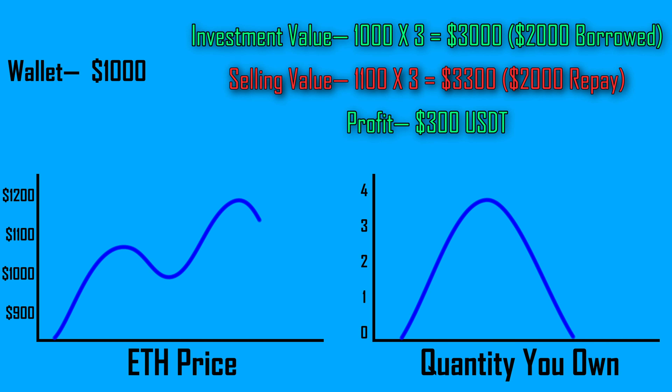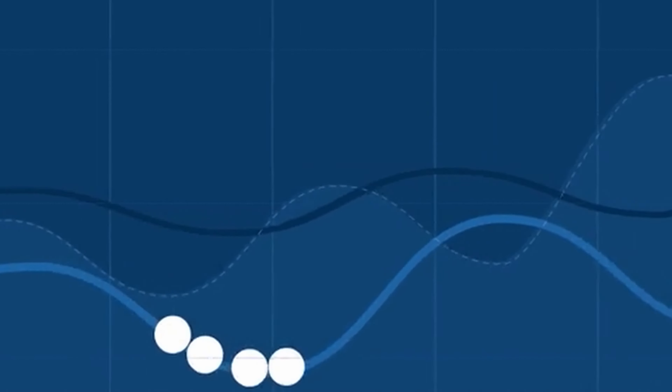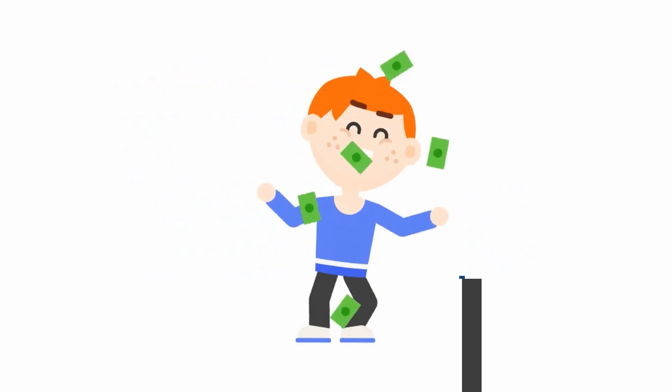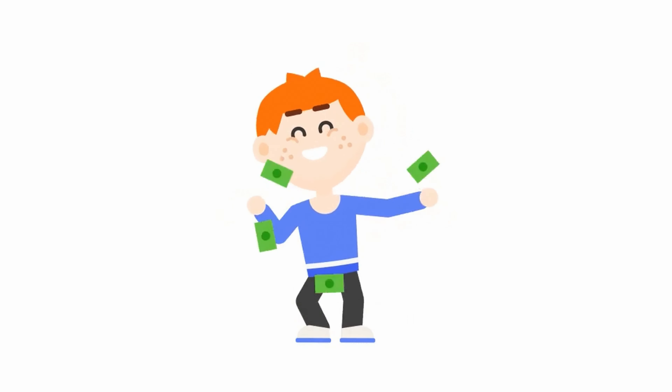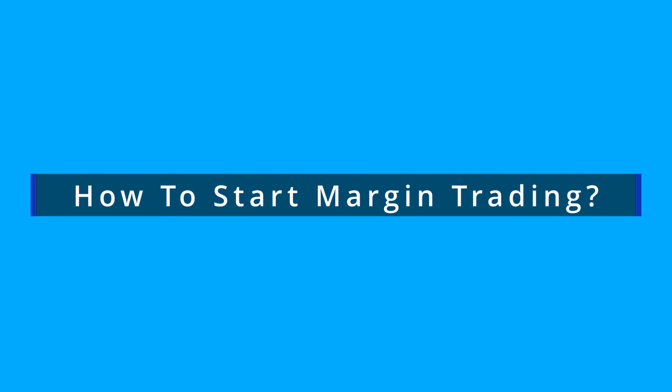As you can understand from this example, profit or loss depends on the price movement. If the price of a coin goes in the predicted direction, you will earn more money; otherwise, you can also lose money. Now let's see how to start margin trading on Binance.